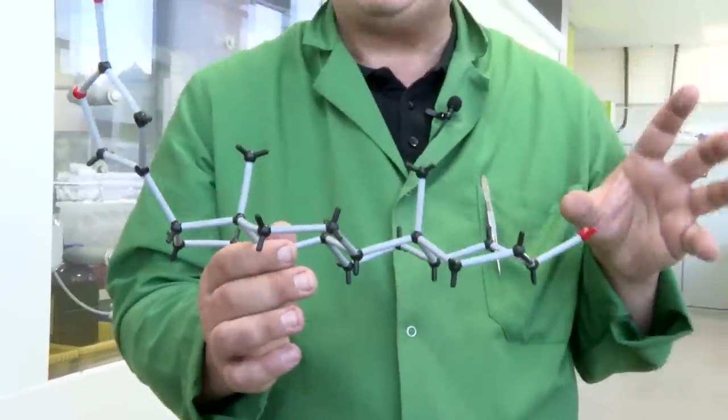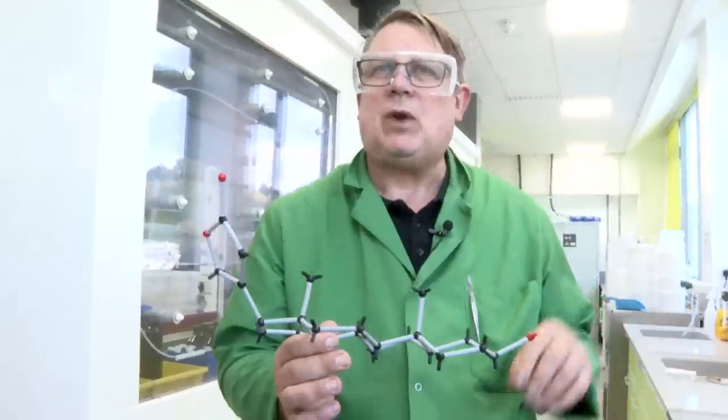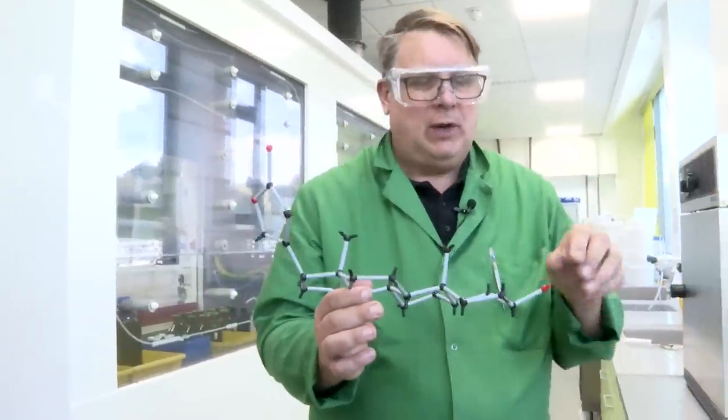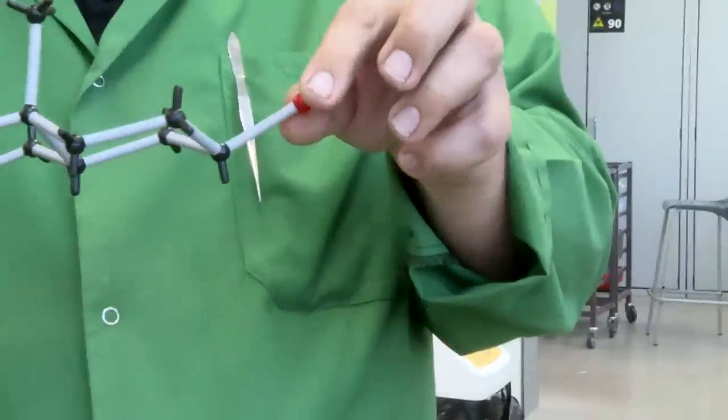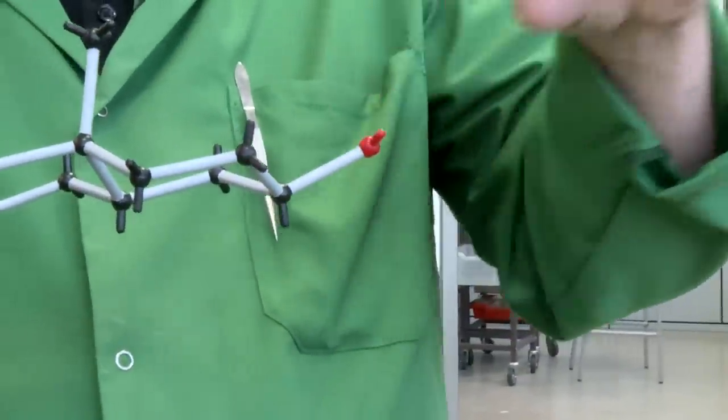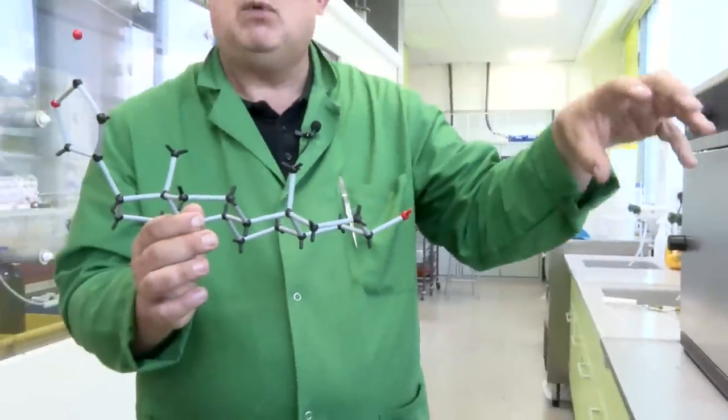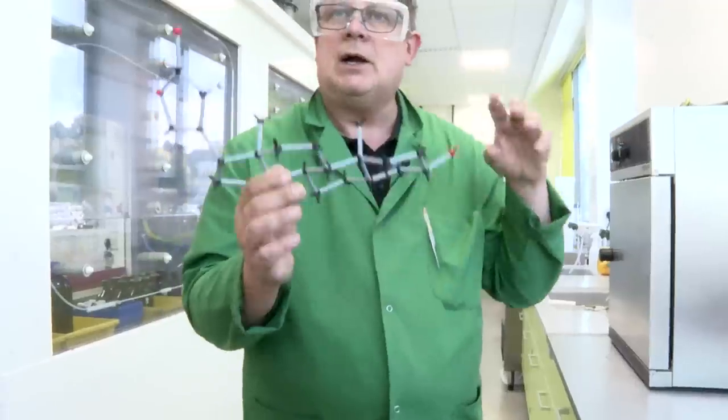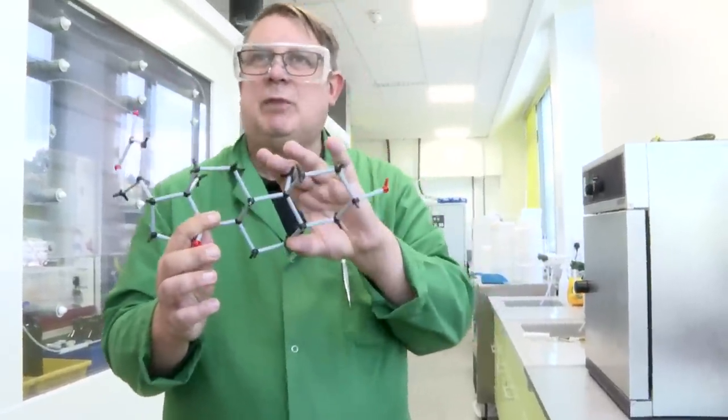So now this is the so-called aglycone. What does aglycone mean? So this oxygen over here would have had three more sugar molecules on it, and I simply didn't have enough carbons in my molecular model kit to put those on. Those are there to give it solubility.